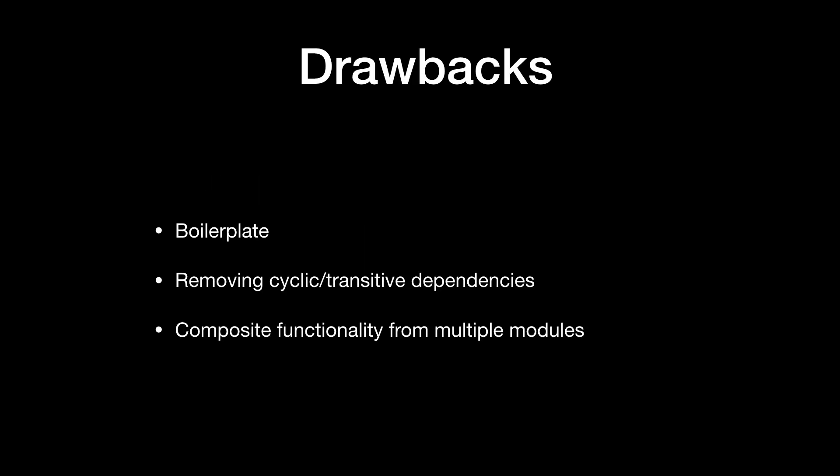There are some drawbacks. I moved one of my open source projects to this architecture and there is more code — some boilerplate. Removing cyclic and transitive dependencies is hard. Gradle won't let you have a cyclic dependency: if my app module depends on accounts and accounts depends on the app, that causes a cycle and Gradle doesn't know how to compile it. Removing that is hard. And when you're on your account screen and need to go to the transaction screen, that's a transitive dependency — so how do you remove that?